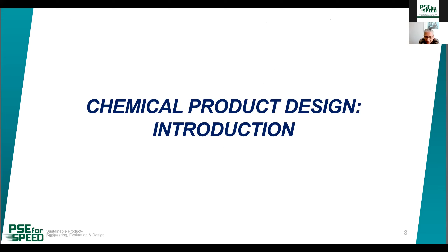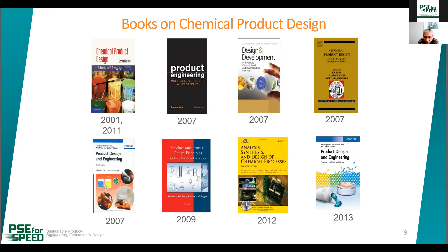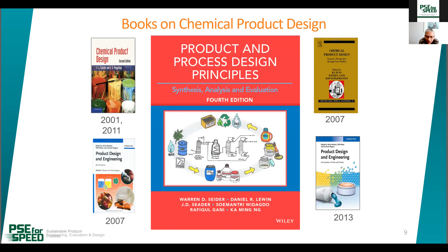There are a large number of books used as textbooks for chemical product design courses — I haven't listed all of them, but some are shown, including one I'm involved with where half the book is related to product design. There are also two special issues of the Journal of Current Opinion of Chemical Engineering — one from 2020 and another coming in 2022 — both collections of papers on chemical product design that will be very helpful for a wider perspective.